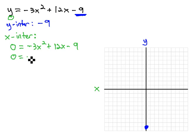We can solve by factoring out the negative 3, giving us x squared minus 4x plus 3, and then continuing to factor the trinomial to be x minus 3 times x minus 1.